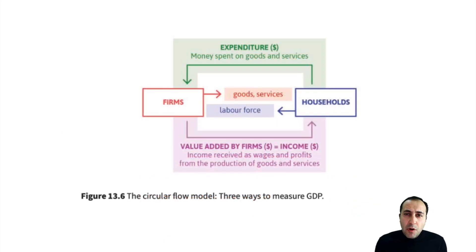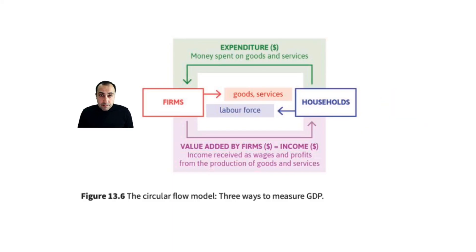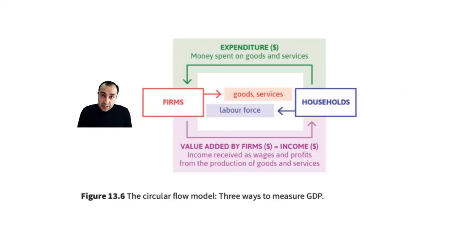Here's that model. This model shows us that someone's spending is another person's income. For whatever reason, households panic and they start to reduce their spending, then the firms will cut down their production and fire their workers. If firms fire their workers, households will have less money to spend. And if they spend less, the firms have to cut down their production. So you see the logic behind this vicious circle.